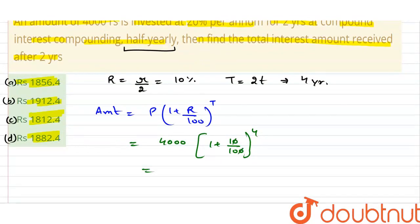0 से 0 cancel हो जाएगा, so 4000, यहाँ पर कितना बनेगा 11 by 10, तो इसे हम लिख सकते है 121 by 100 into 121 by 100.